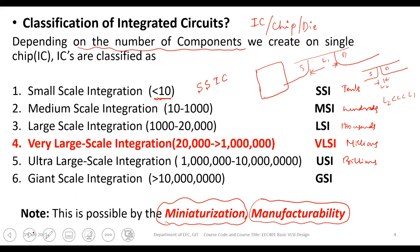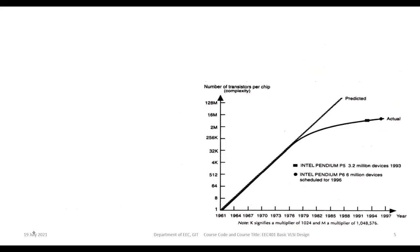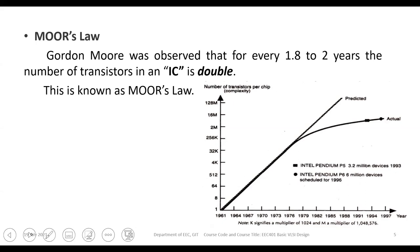One person identified that this progression from small scale to giga scale integration was possible because of miniaturization and manufacturability, and he predicted a methodology called Moore's Law. George Moore, the founder of Intel, observed that for every 1.8 to 2 years, the number of transistors in an IC would be doubled.